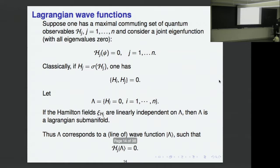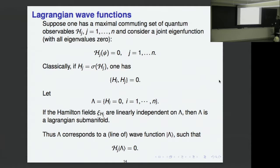Let's move on to Lagrangian wave functions — this is an answer to the question of what quantum object is associated to a Lagrangian submanifold. To motivate this, suppose one has a maximal commuting set of quantum observables. Consider a joint eigenfunction. By the Poisson relation between commutators and Poisson brackets, the symbols of these operators Poisson-commute, and their joint level set — level zero — is a Lagrangian submanifold, provided the Hamiltonian vector fields are linearly independent there.